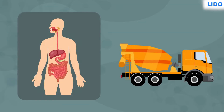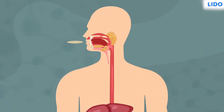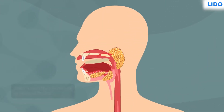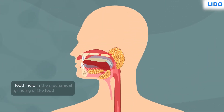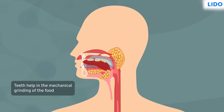This entire process somewhat resembles the process of ingestion and digestion. The different food substances we eat are first mechanically ground with the help of teeth and broken down into smaller pieces in the mouth.